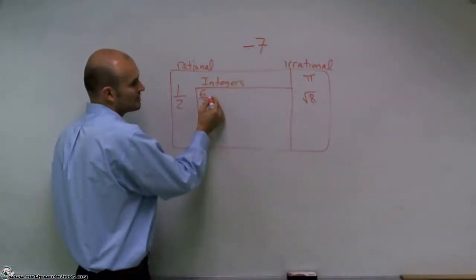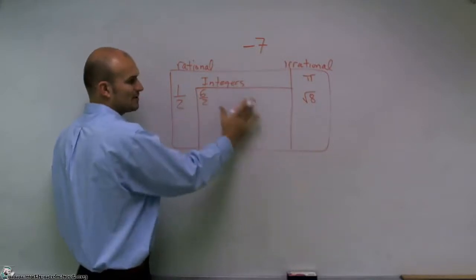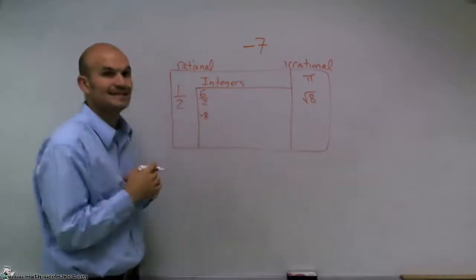However, 6 divided by 2 does equal 3. But the special thing about integers, which is going to separate them from the rest of these, is that they can also be negative.